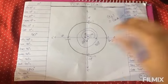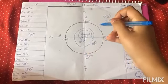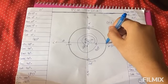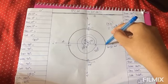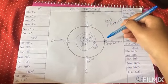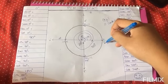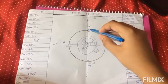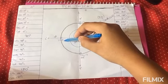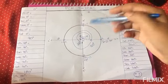In this graph we have a circle which intersects the x-axis and y-axis at certain coordinates, that is 1, 0 and 0, 1 and minus 1, 0 and 0, minus 1.